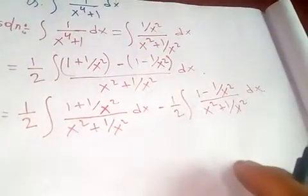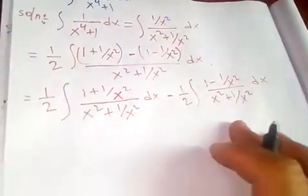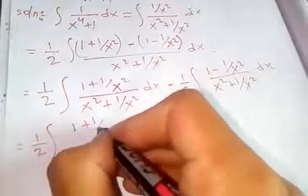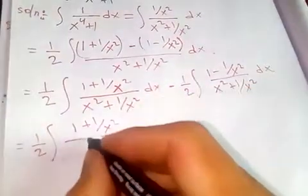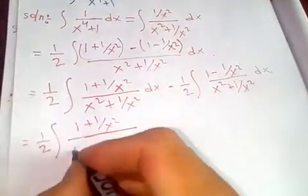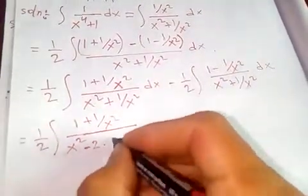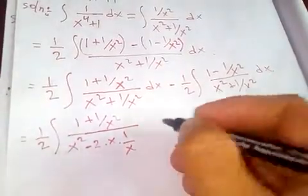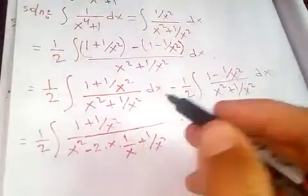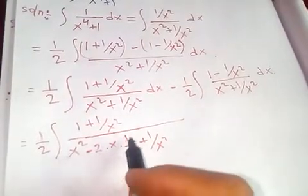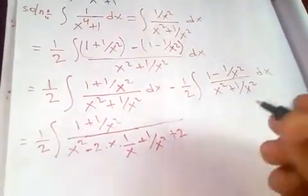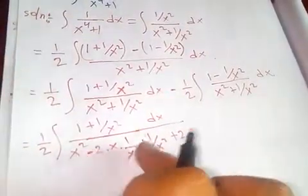Let's take them separately. We have half integral of 1 plus 1 over x squared, divided by x squared plus 1 over x squared, dx. Now let's simplify this denominator. We can write x squared minus 2 plus 1 over x squared, which is x minus 1 over x, all squared. But here we don't have minus 2, so we add plus 2, and that this and this will cancel and you get back this one.